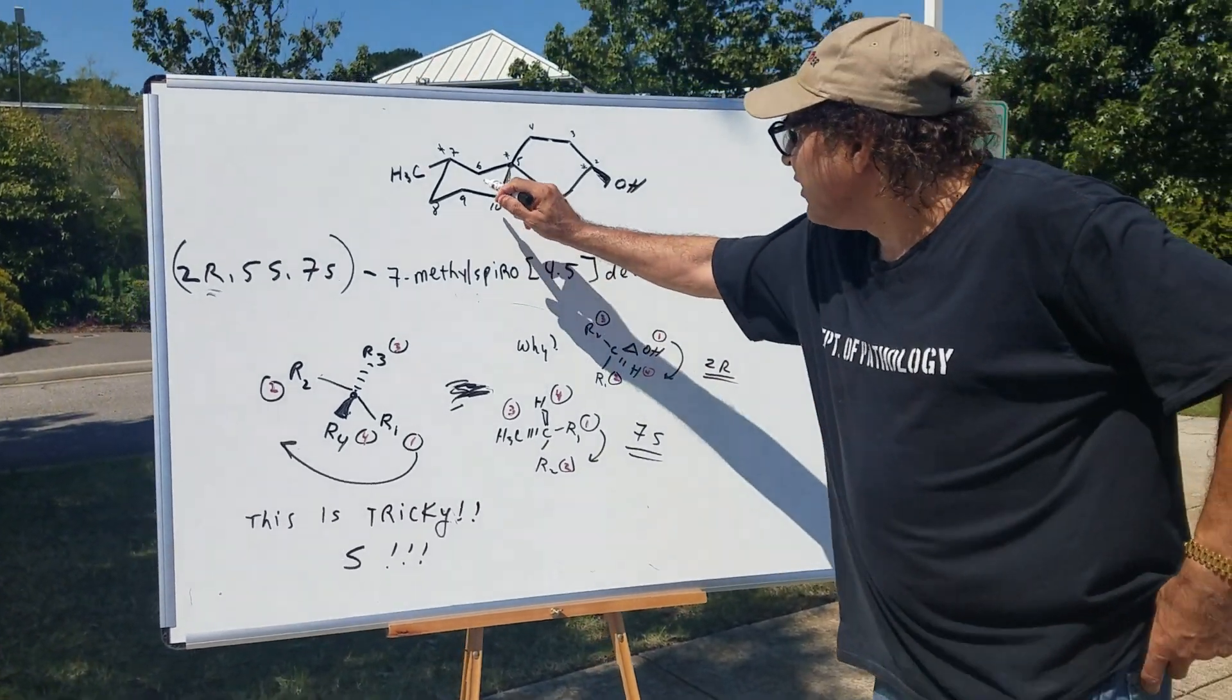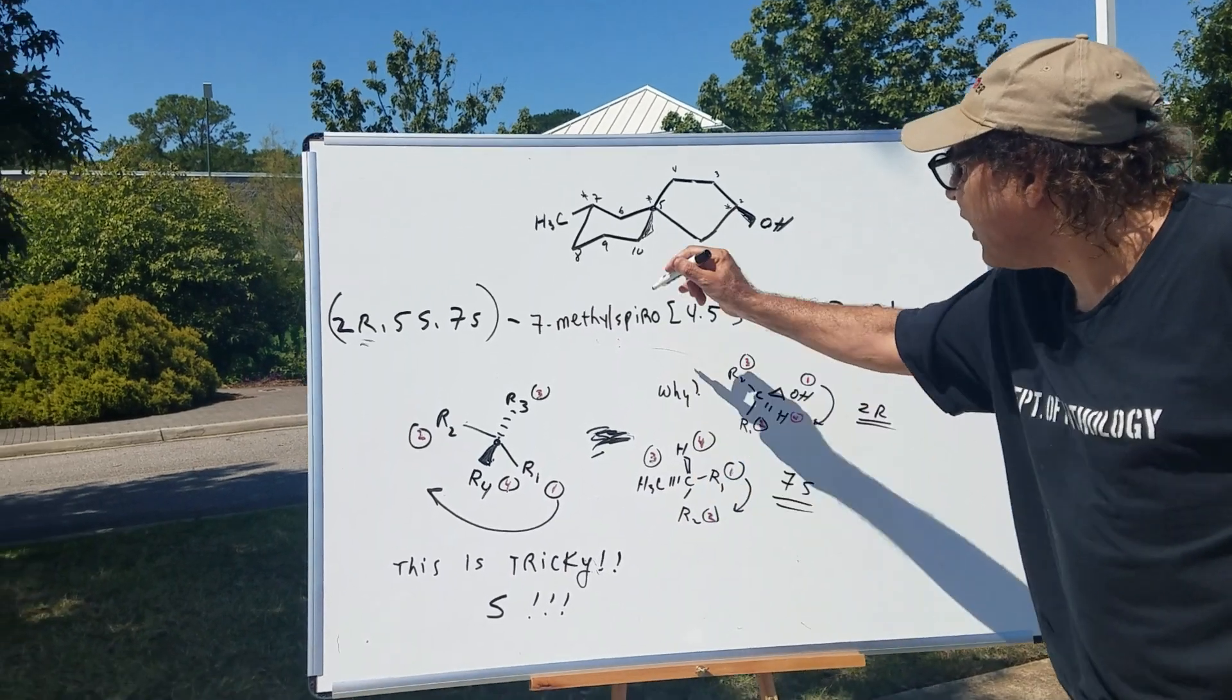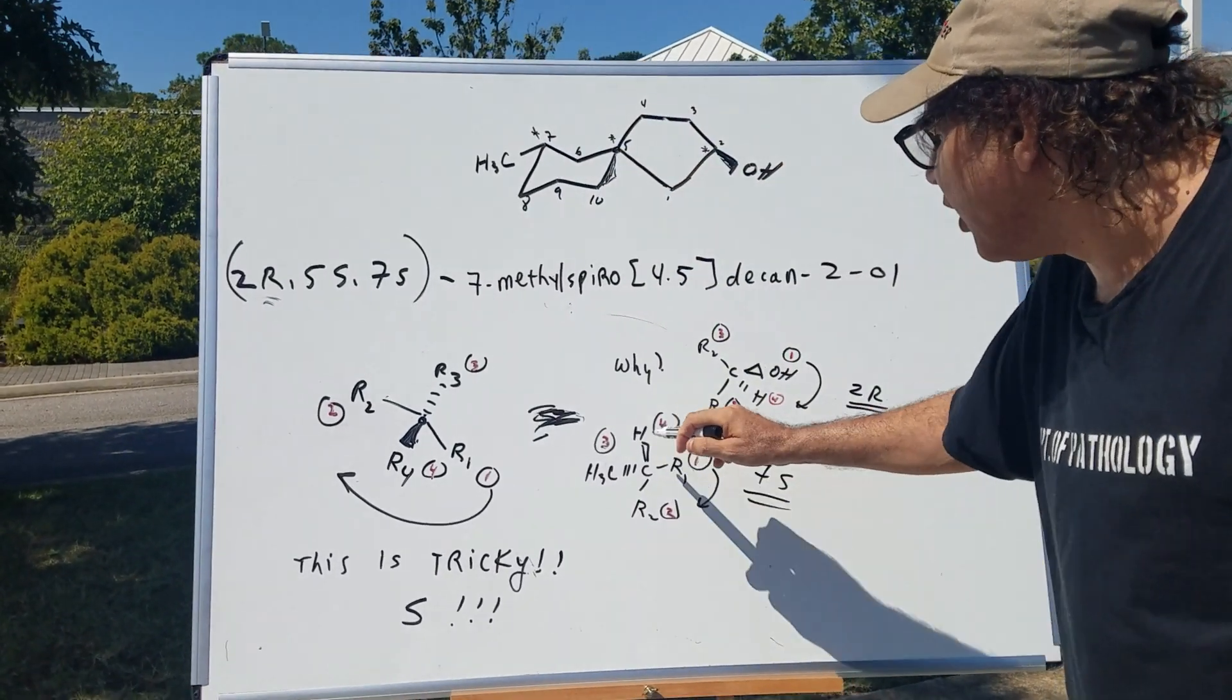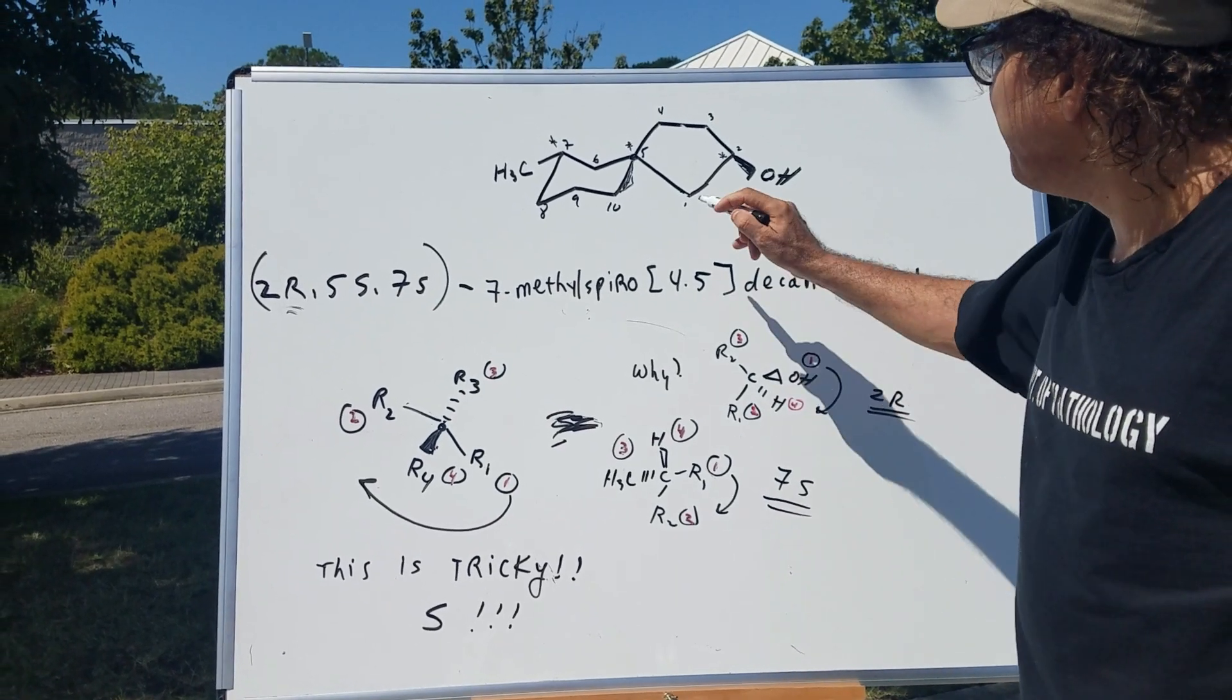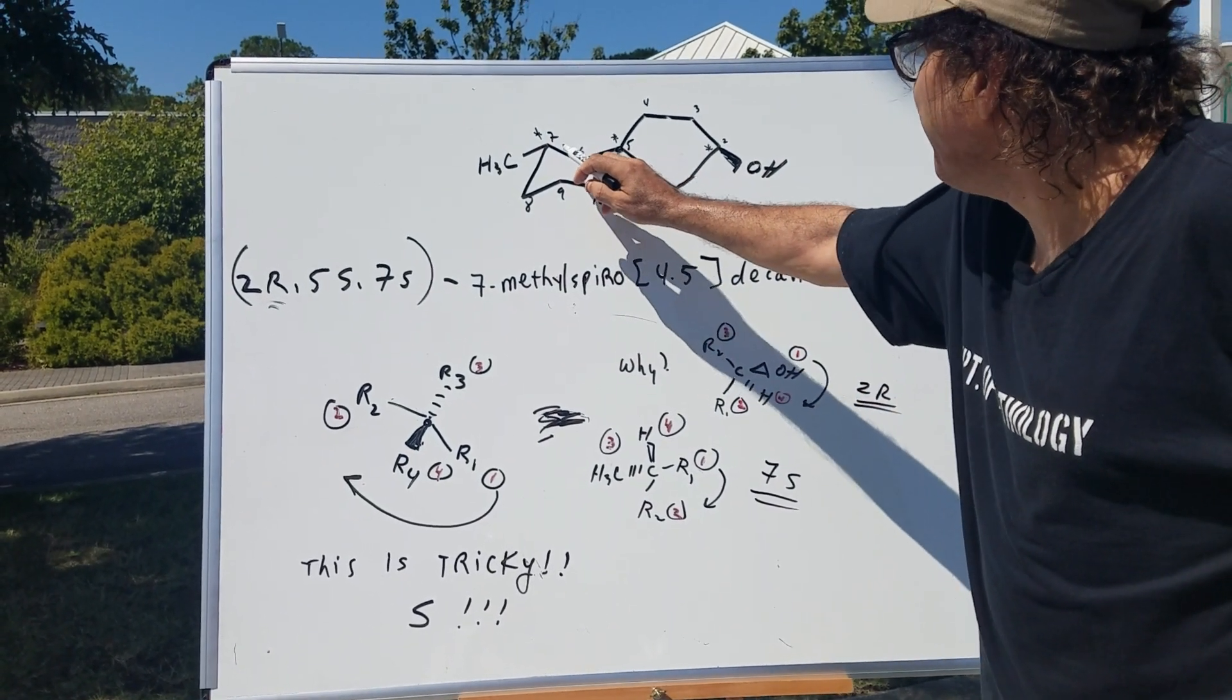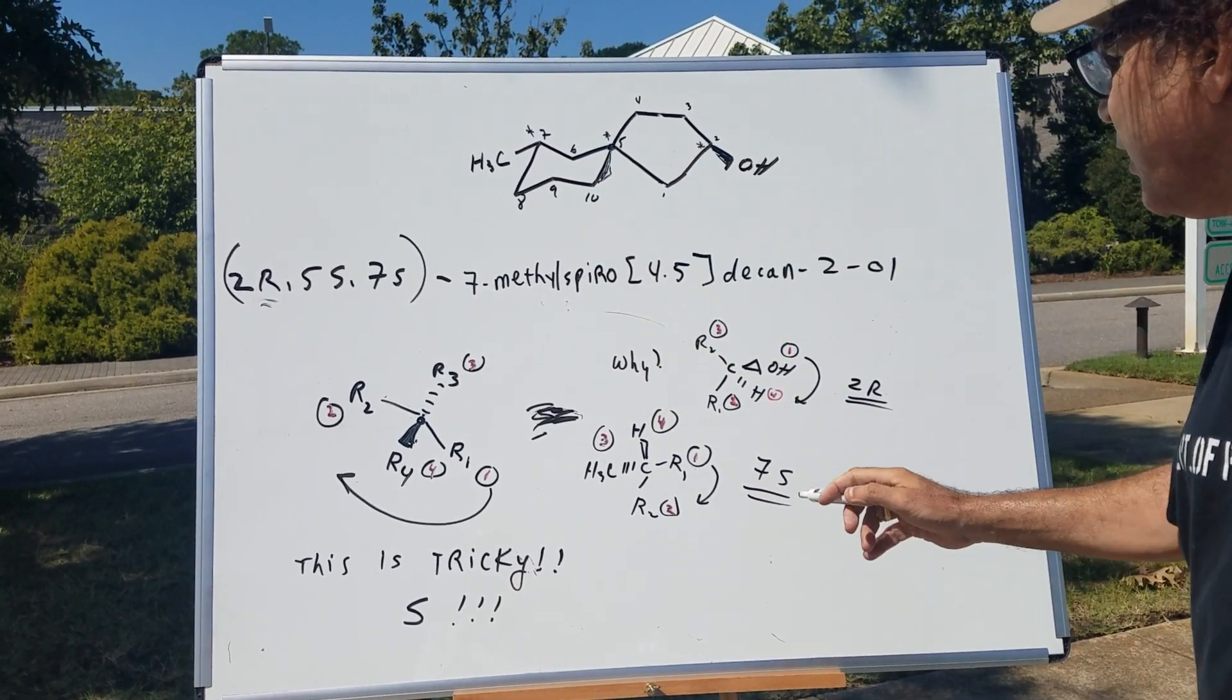The last one is easy. This is going down for the methyl. So, down is a dash. So, the hydrogen goes up. And I'll call that group number 4. Who would be number 1? Well, obviously, that would be the path going this way. That would be 1.